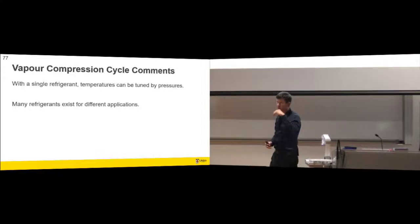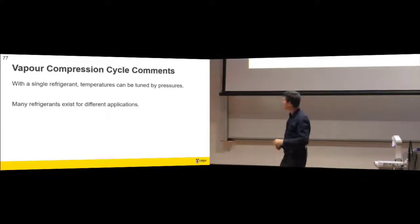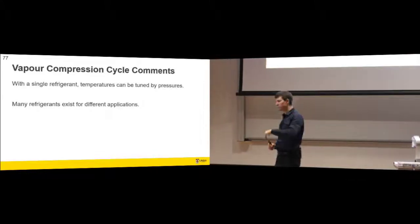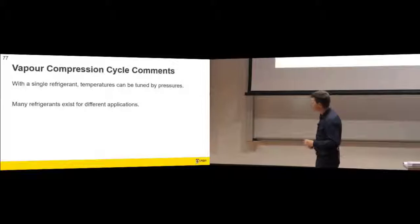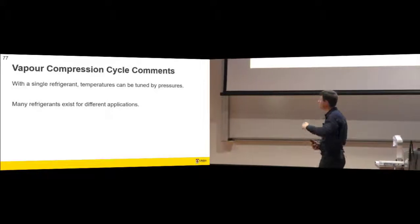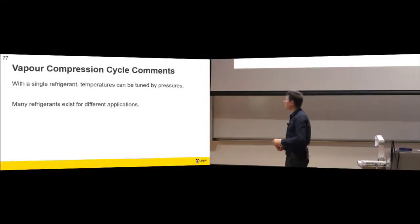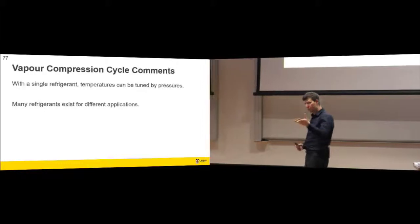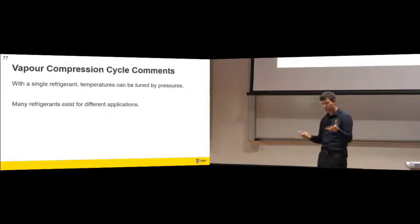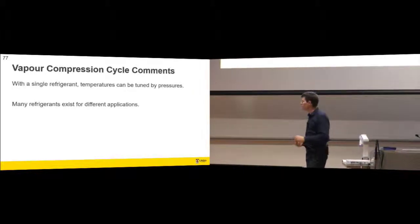For R134a, if we choose a pressure of 2.9 bar we get about zero degrees C. If we choose a pressure lower than that we'll get a lower temperature. And if you want to go lower than R134a can do, you choose a different refrigerant.